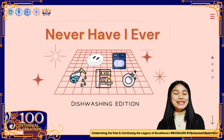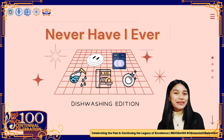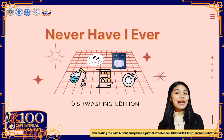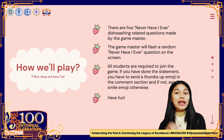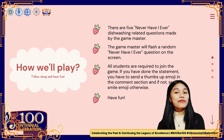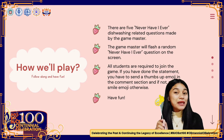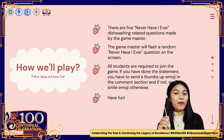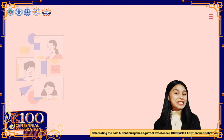But before that, let's have a short icebreaker. Have you ever played Never Have I Ever before? Don't worry, because I will be presenting the guidelines as to how we will play the game. There are five Never Have I Ever dishwashing-related questions made by the Game Master. The Game Master will flash a random question on the screen. All students are required to join the game. If you have done the statement, send a thumbs up emoji in the comment section; and if not, send a smile emoji. Have fun, class!